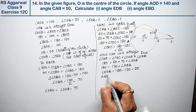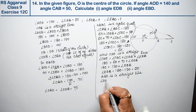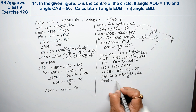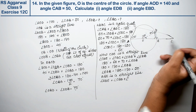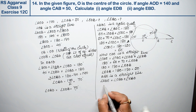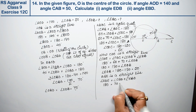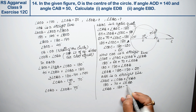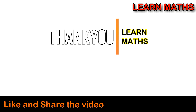Similarly, ABE is a straight line, so angle ABE = angle OBD + angle EBD = 180 degrees. Angle OBD = 70 degrees, so angle EBD = 180 minus 70 = 110 degrees. Thank you — if you understood this step-by-step solution, please subscribe to my channel on Maths and share it with your friends.